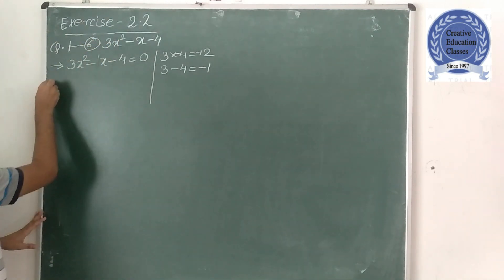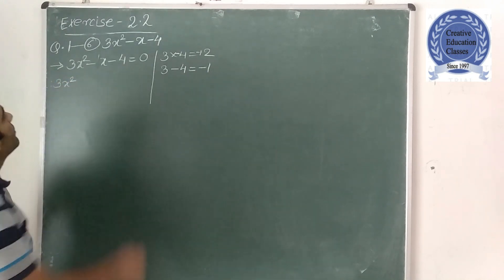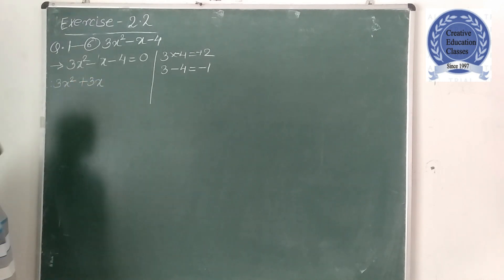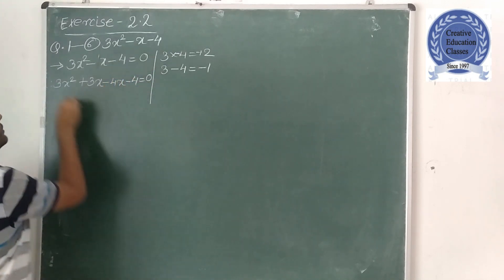So what will happen here? First and last number to leave, split the middle number. So what will happen here? Plus 3x minus 4x minus 4 is equal to 0, 2, 2 pair.